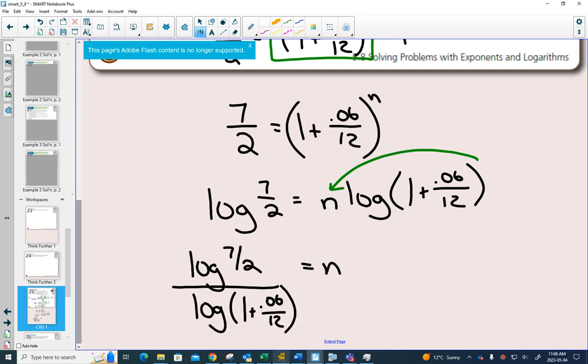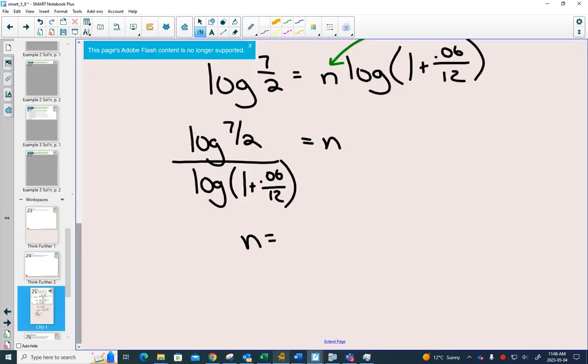And now I can get N by itself by dividing. 251.17.